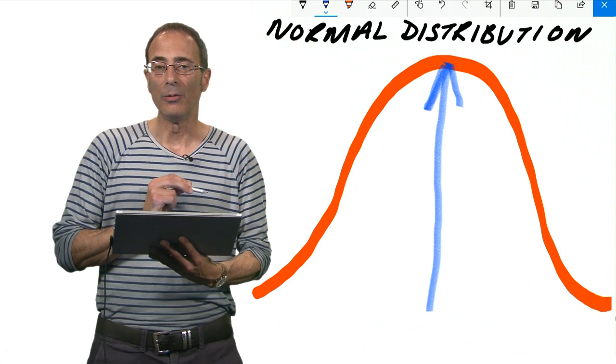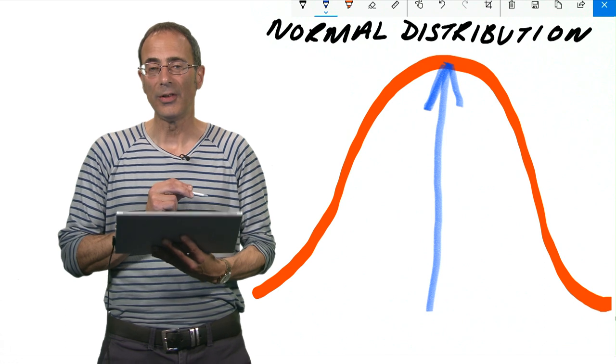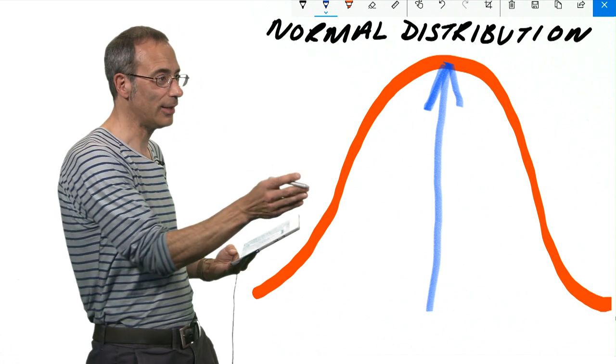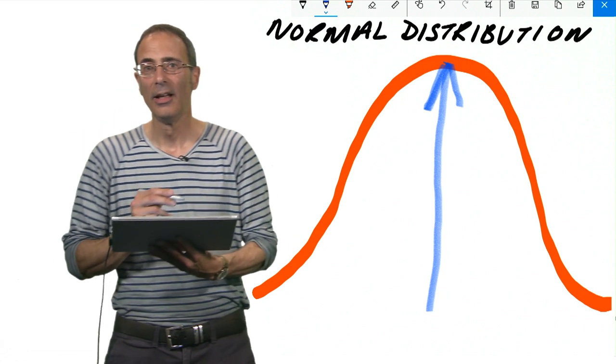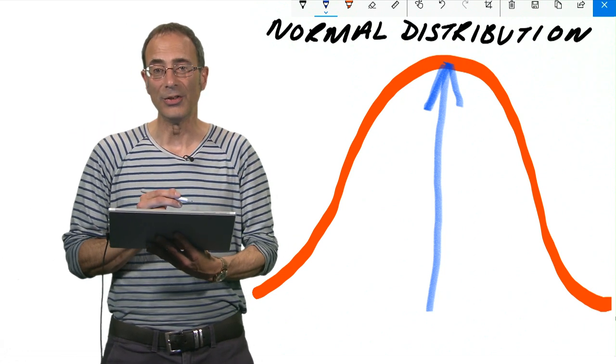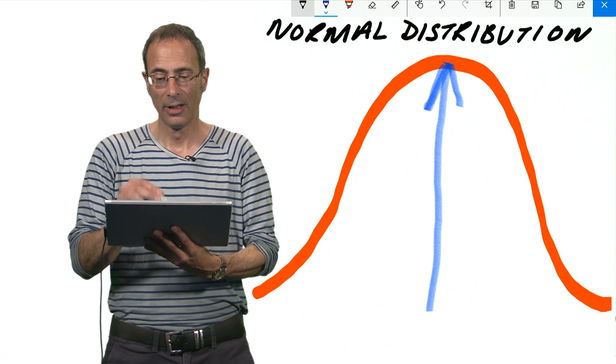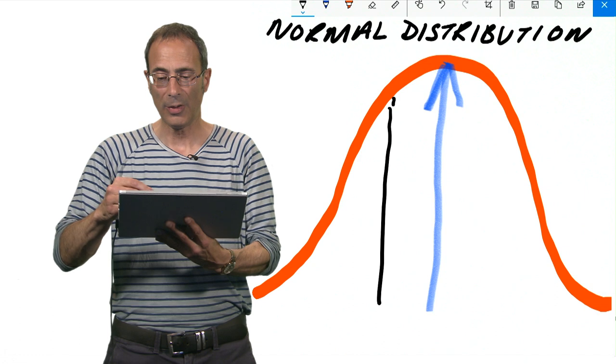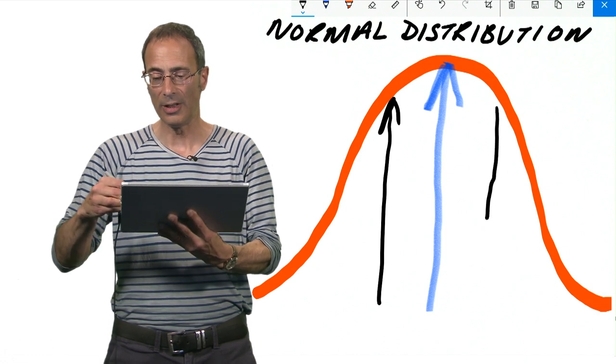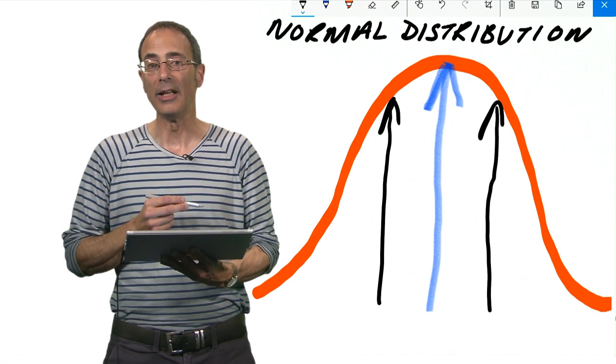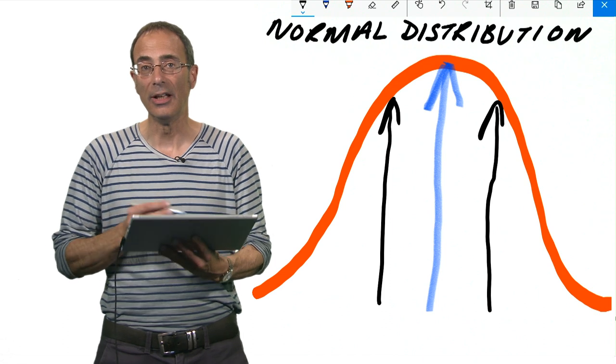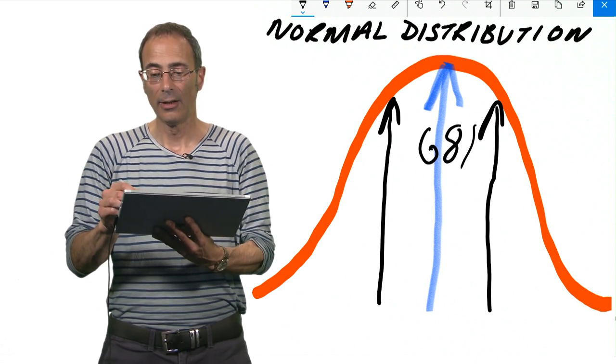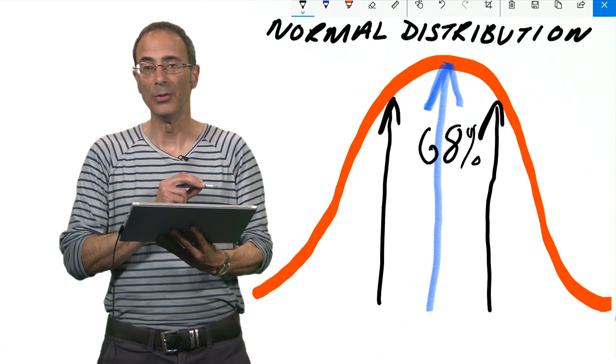The second thing that we can exploit about normal curve is the dispersion or the spread of scores either side of that mean value. We measure that in something called the standard deviation. Within plus or minus one standard deviation from the average central tendency, you'll find 68% of all possible scores.